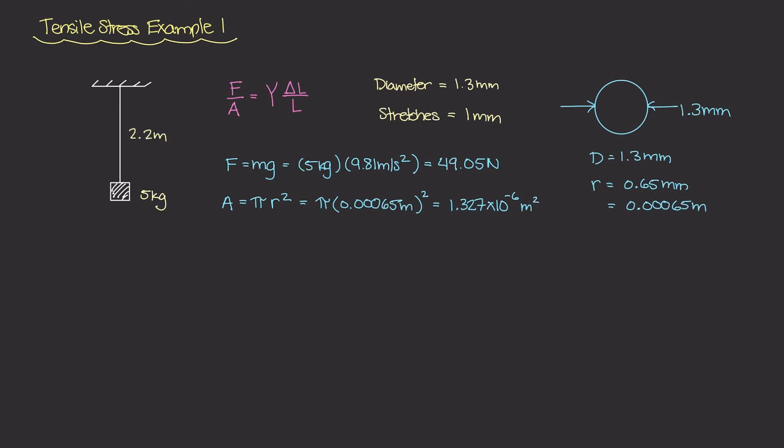Now if we take F over A, which is this expression right here, we have our 49 newtons divided by the 1.3 times 10 to the minus 6 meters squared as the area, we get a value of 3.696 times 10 to the 7th newtons per meter squared. So that is the tensile stress inside of this wire as it's being pulled by this mass.